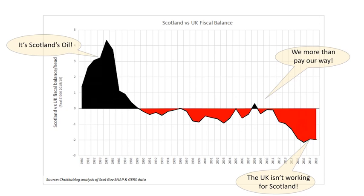So where you end up today is Scotland benefits from this famous £2,000 per capita fiscal transfer — 10.7 billion, or let's say 10 billion for easy round numbers. That's what Scotland benefits from being in the UK at the moment. And that's why the nationalists will now say, well, that proves the UK is broken.